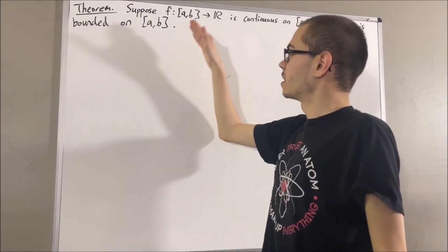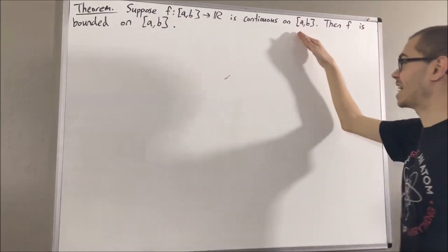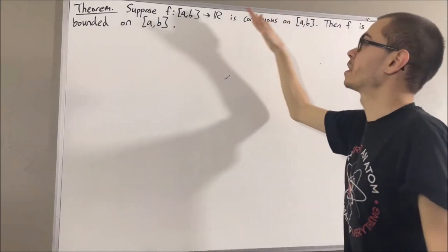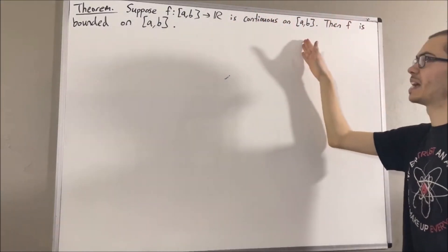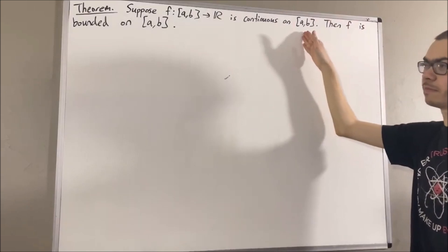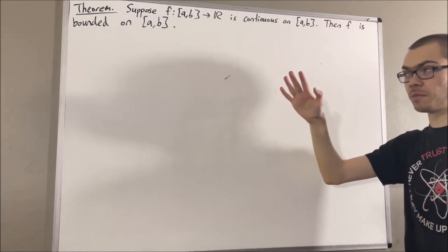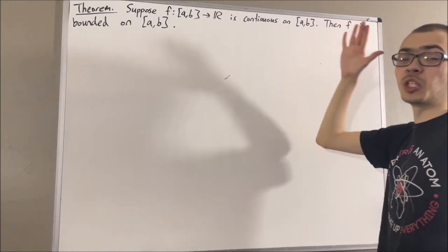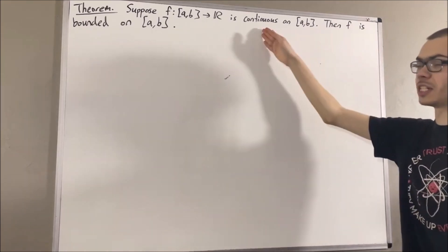Now, to say that f is continuous on a, b means that f is continuous at every point in a, b. Now, in proving this theorem, we are going to be using the sequential criterion for continuity.